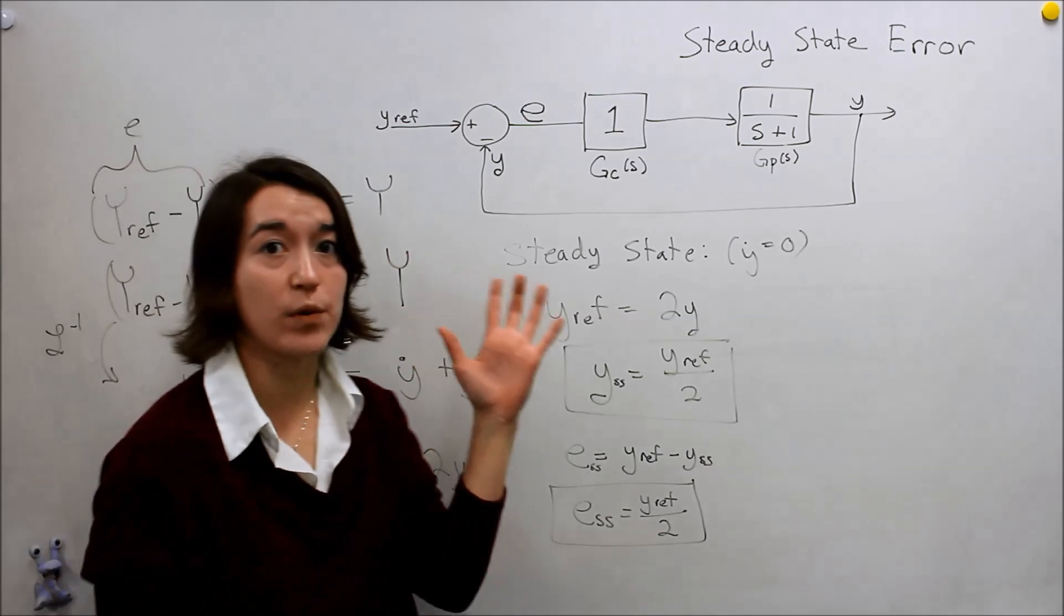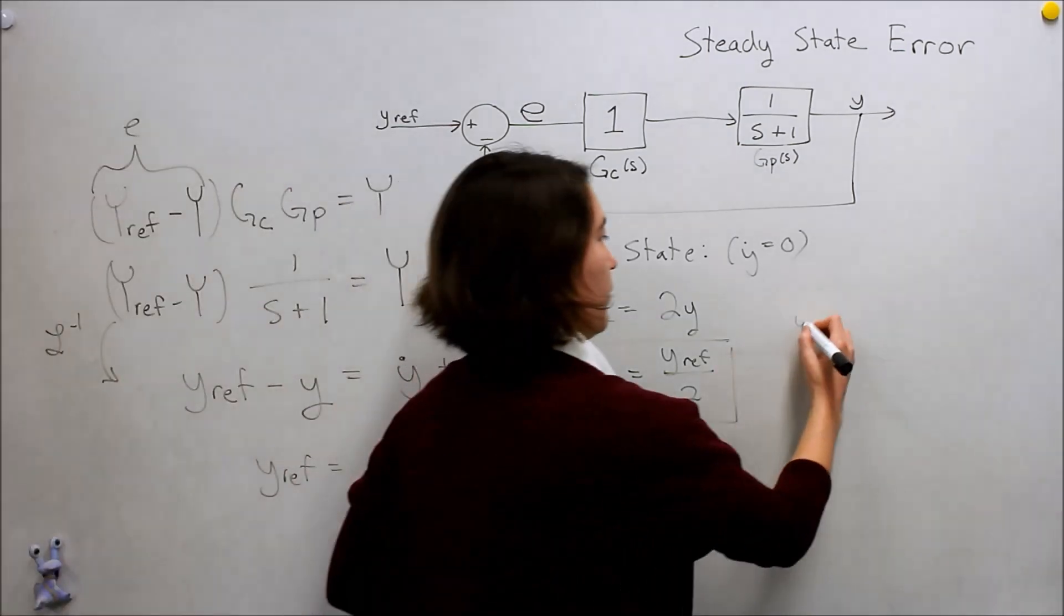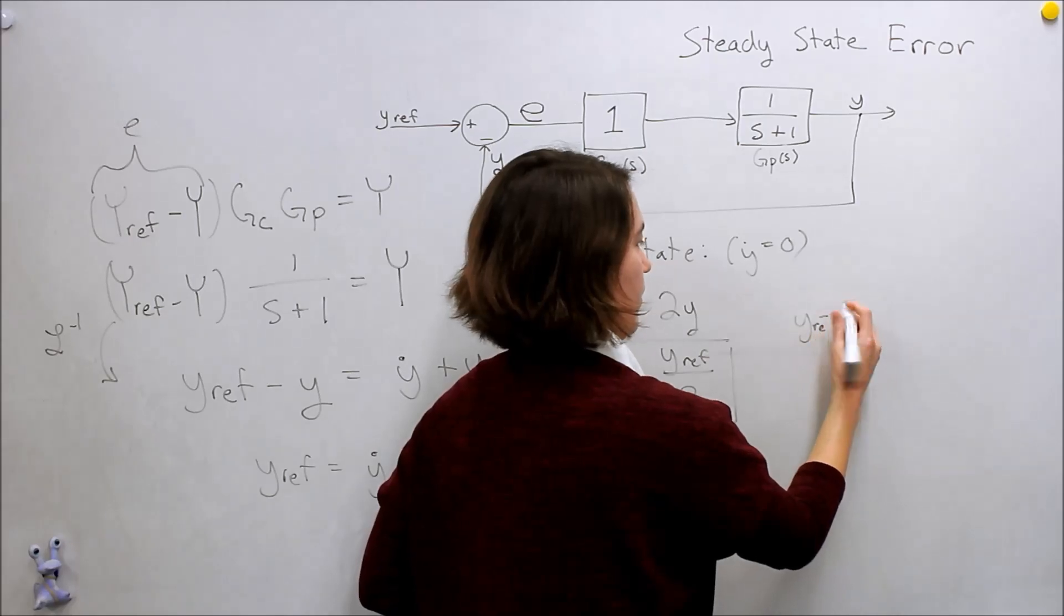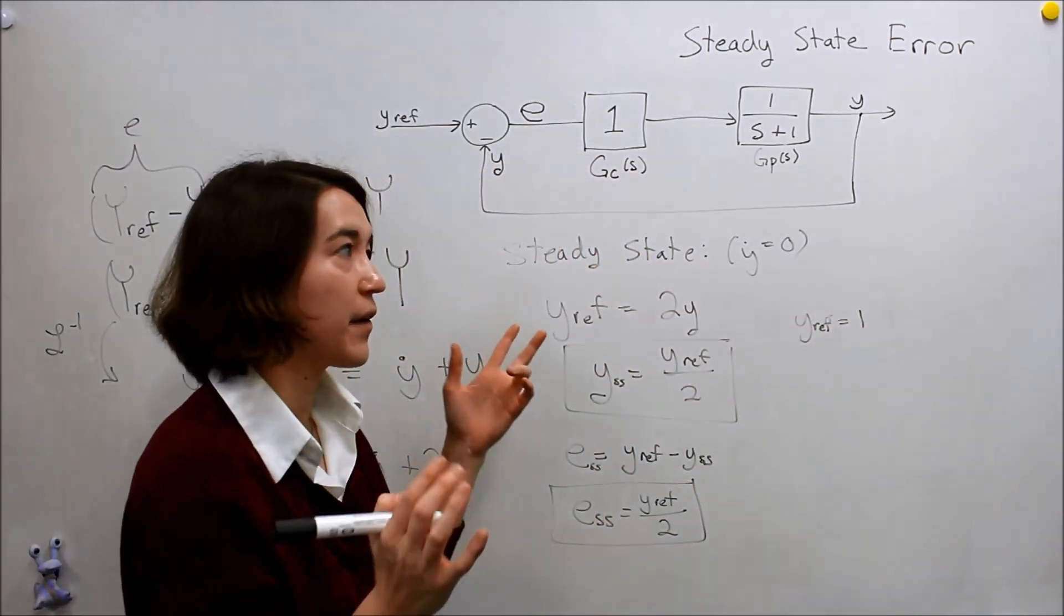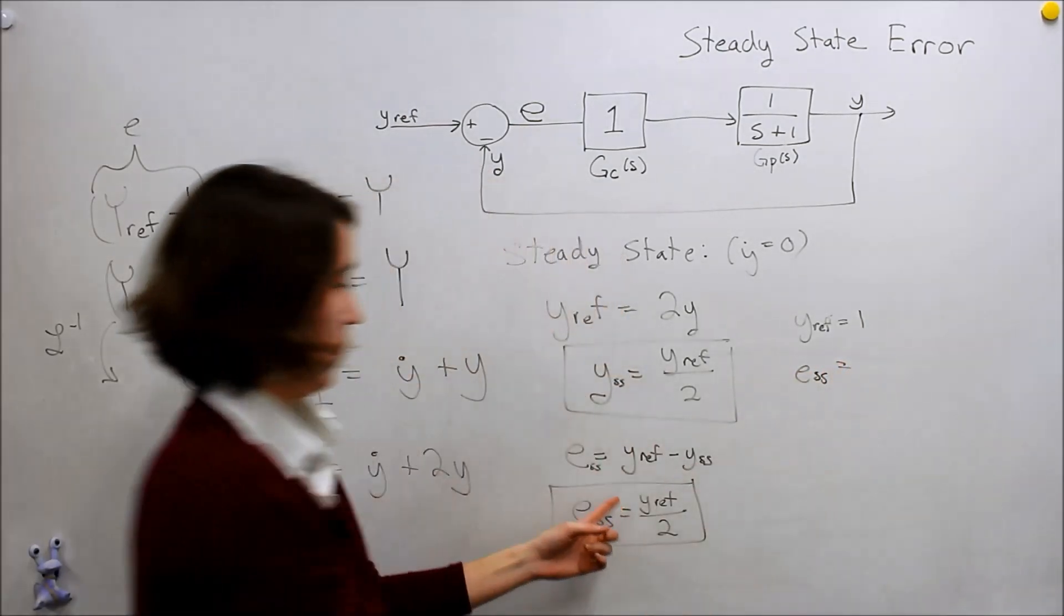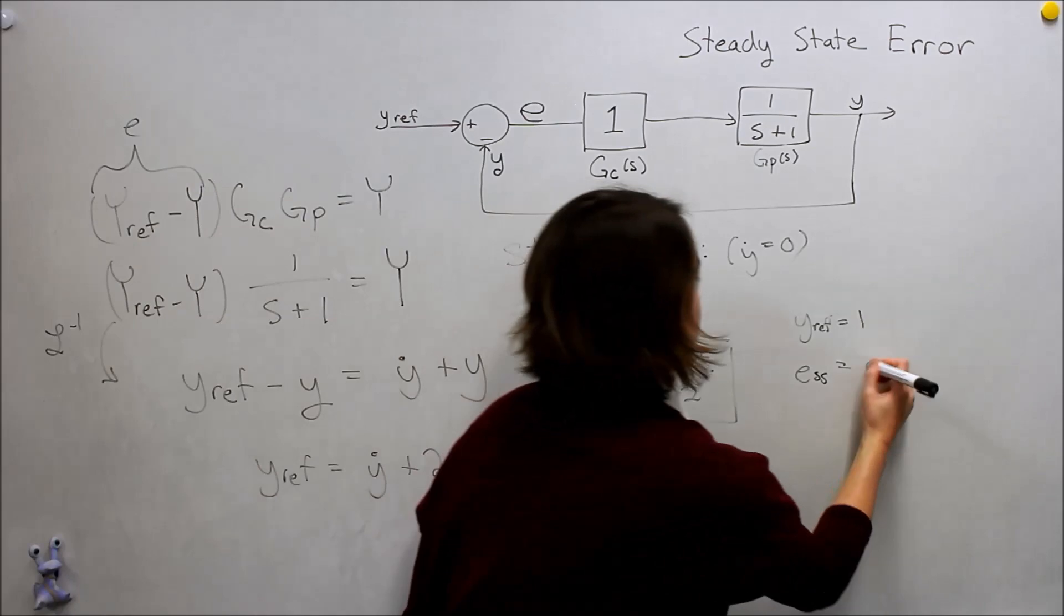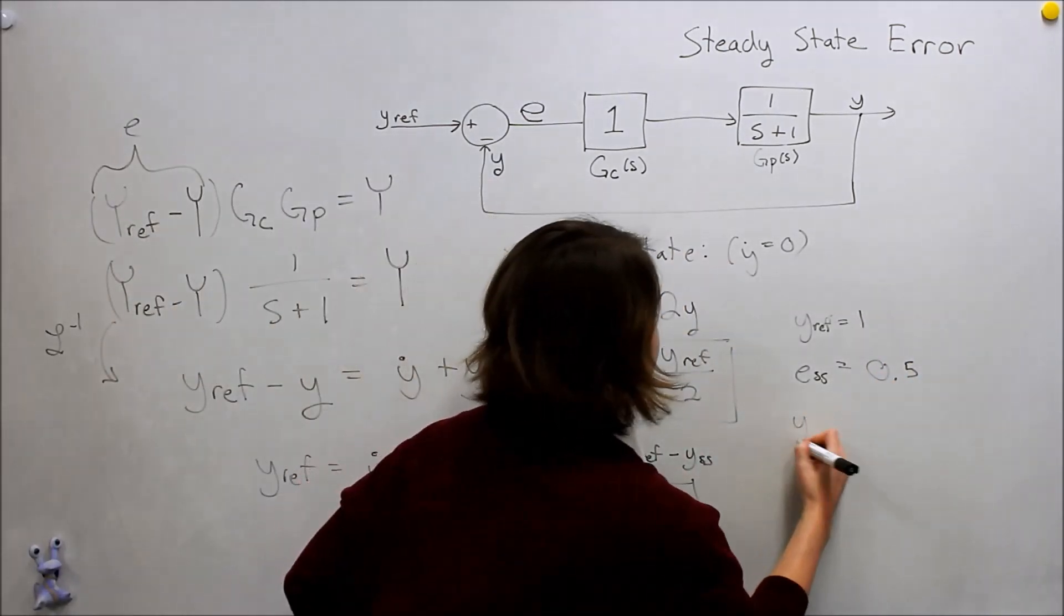If we think about the example we just did in MATLAB, we had y_ref equal to 1. We saw that our error went to 1 half, so error steady state went to y_ref over 2, which is 0.5. And our y_ref went to the same value.